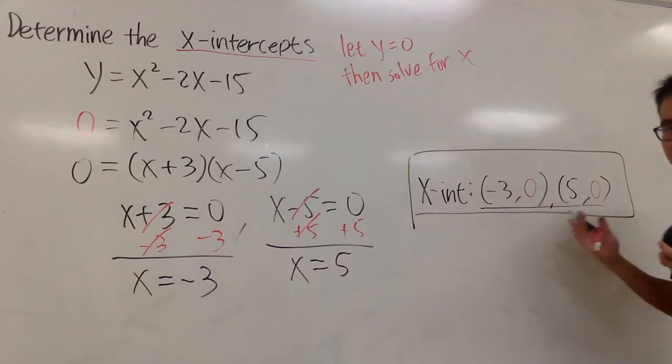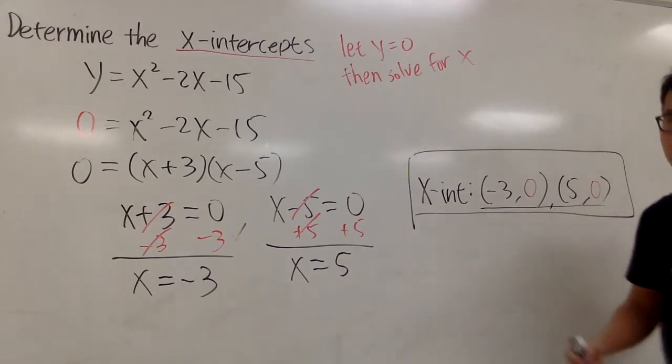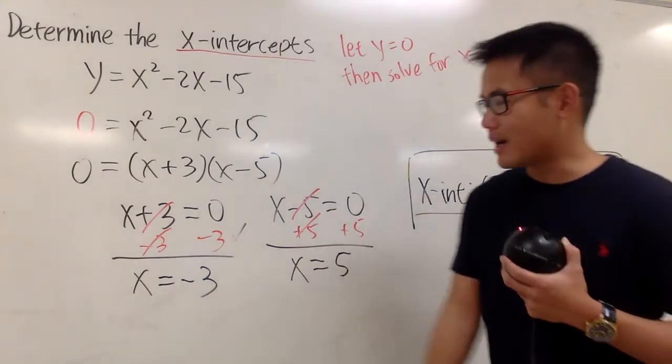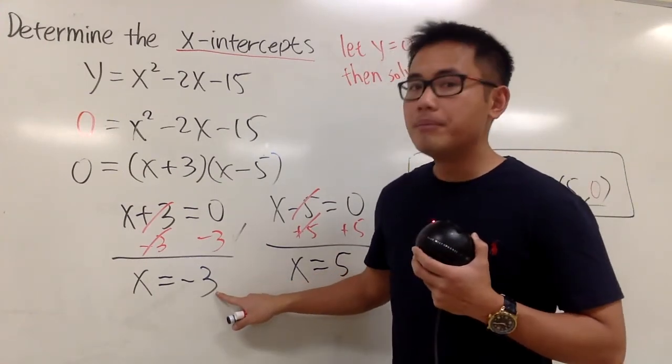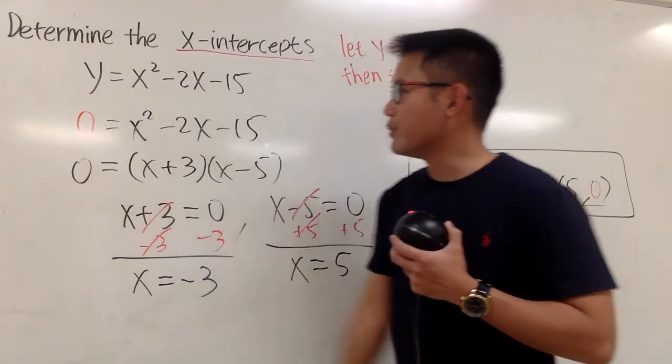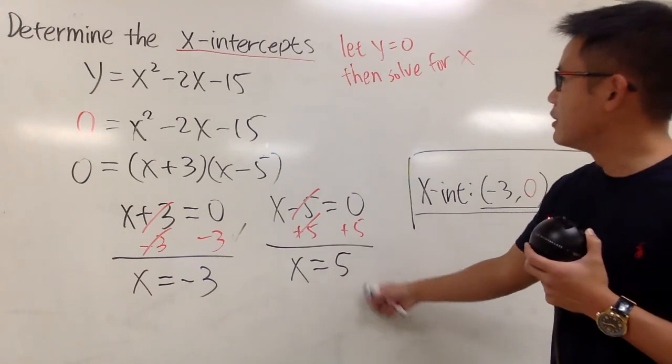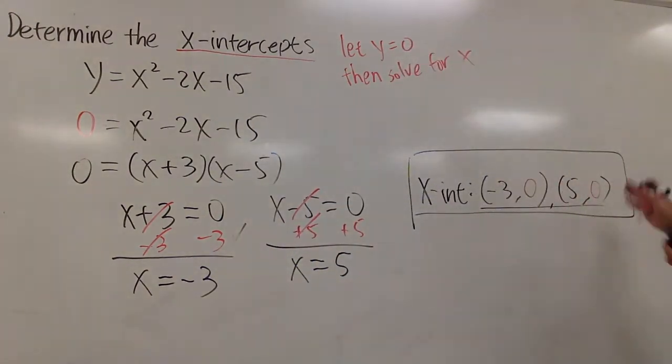Be sure you write down the answer correctly as well. Do not just put negative 3, 5. That's not correct. Remember, the x value pairs up with this y value. Likewise, this x value pairs up with the 0 for the y value. That's it.